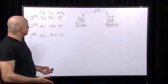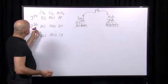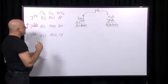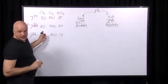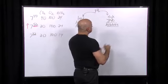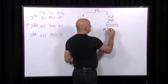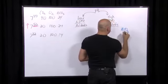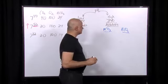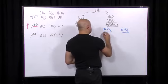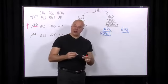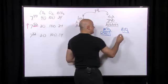Here we have a pH of 7.56, which is high, so there's an alkalosis. The next step is to look at the pCO2 and the bicarbonate. If the pCO2 is low — less than 40 — the main problem is a respiratory alkalosis.